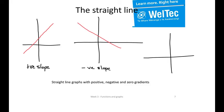And if we have a zero slope, then the line is parallel to the x-axis. An example of this would be y equals 4, and the slope of that is zero.